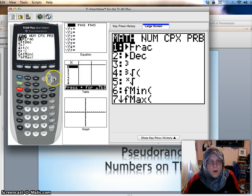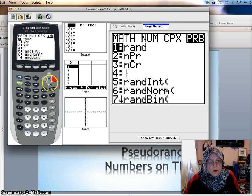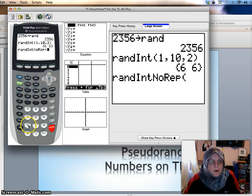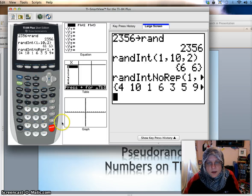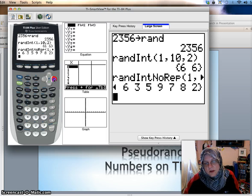There is, on some of your calculators, if you have the latest OS for the 84, down at the very bottom here, the randint no-repeat generator. And so that one, if you do 1 comma 10, it won't let you do comma 2 because it won't give you just two numbers. It'll give you all 10. And so you might want to store that in a list if you're going to be using them. Notice that it just orders all of the 10 numbers.